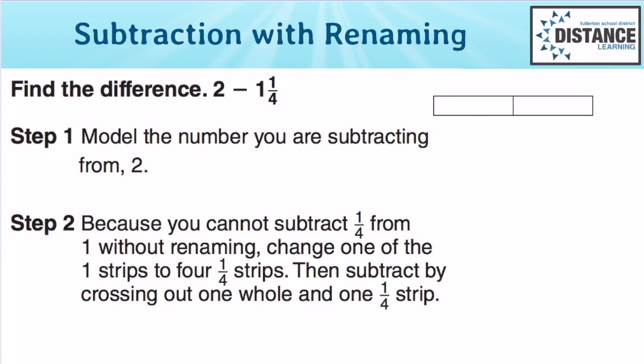Now the problem asks you to take away 1 and 1/4. But notice, there are no parts. These are all wholes. How can you take away 1 1/4 from the 2? If you said separate one of the wholes into 4 parts, you're correct. Instead of using 2 wholes, we're going to change 1 of the wholes into 4 parts because the denominator is 4. So separate into 4 parts: 1, 2, 3.